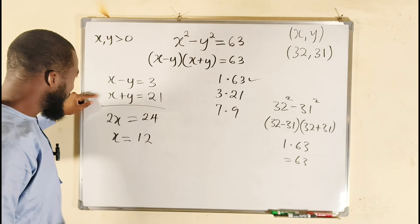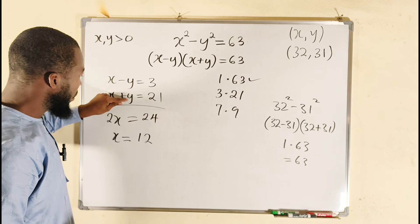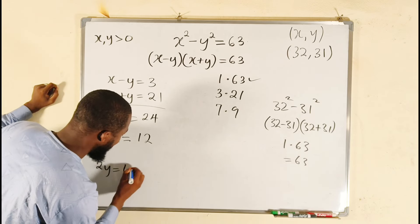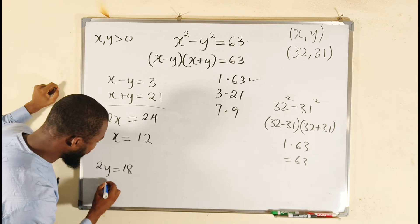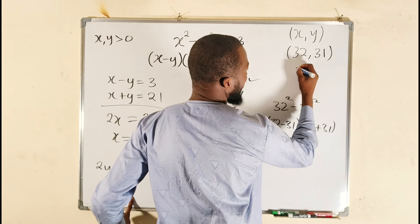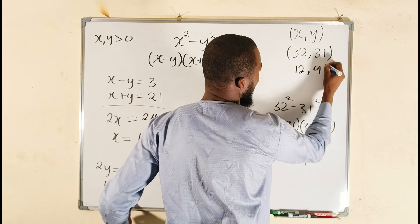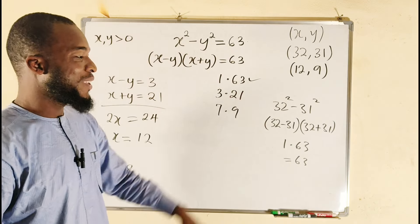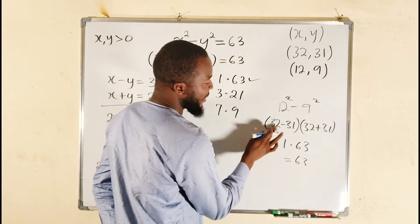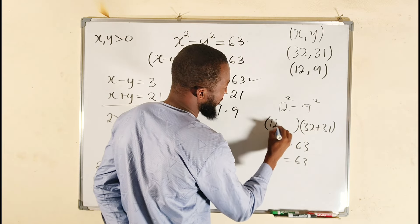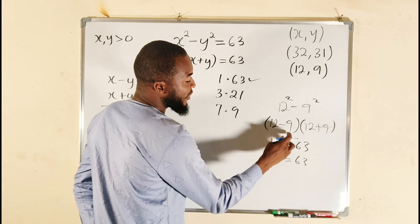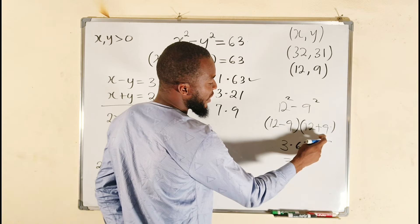Subtracting to find y: x minus x is 0, y minus negative y is 2y, and 21 minus 3 gives us 18. So 2y equals 18 and y equals 9. Our second pair of solutions is x equals 12, y equals 9. We can verify: 12 squared minus 9 squared equals 12 minus 9 times 12 plus 9, which is 3 times 21 equals 63. Confirmed.